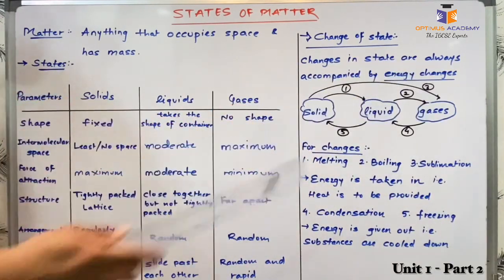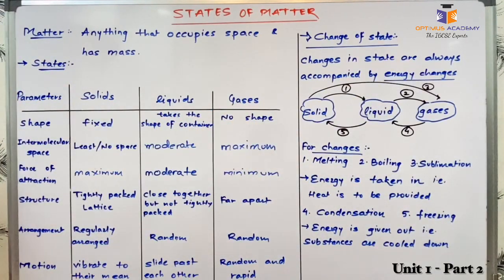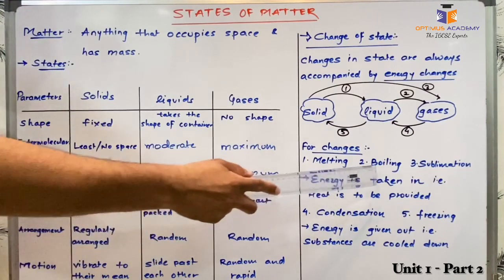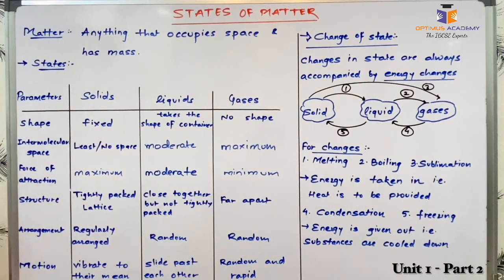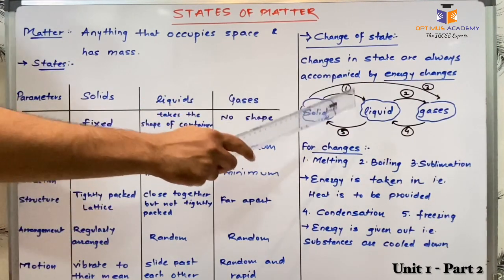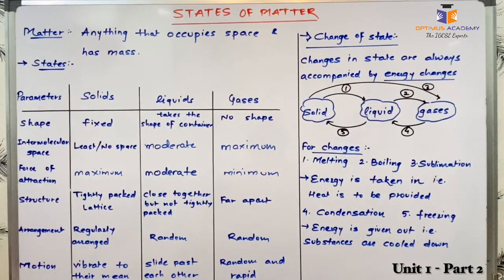To go from left to right — which accompanies changes of melting, boiling, and sublimation, that is change from solid state to gaseous state — we must provide energy to the molecules. When we provide heat energy and solids turn to liquid or liquid turns to gases, the intermolecular force of attraction decreases, the motion of the particles increases, and they start moving away from each other.